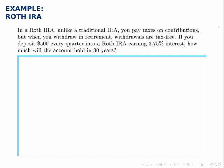The example, though, is that you deposit $500 every quarter, meaning four times a year, into a Roth IRA that earns 3.75% interest. And the question asks, how much will this account hold in 30 years?